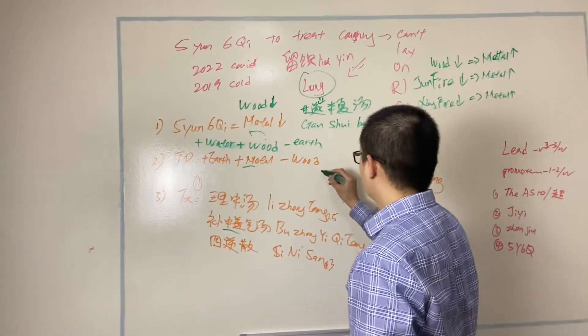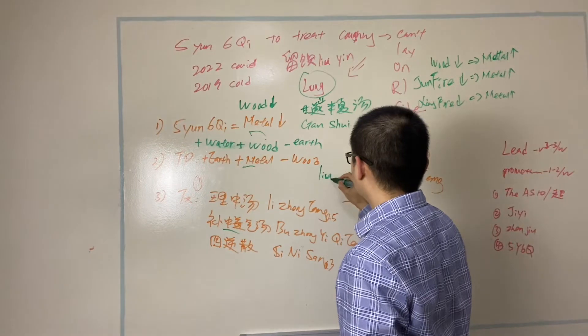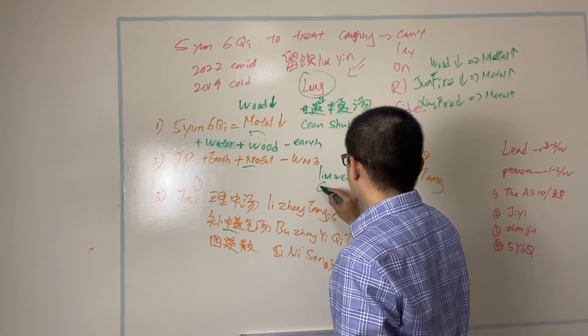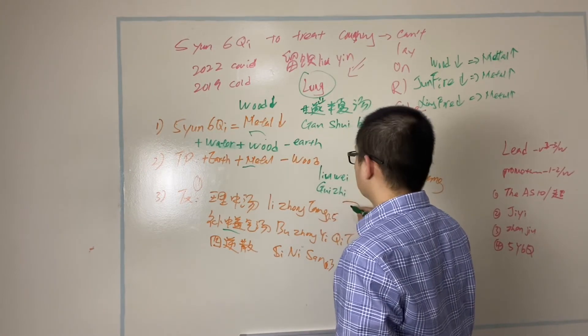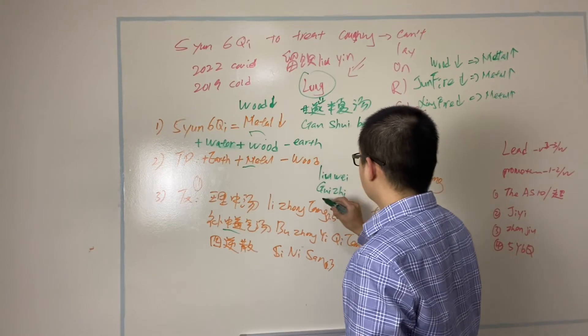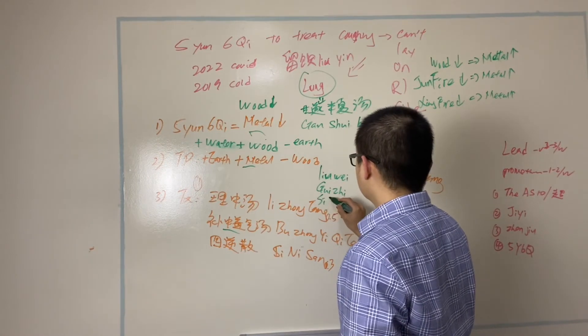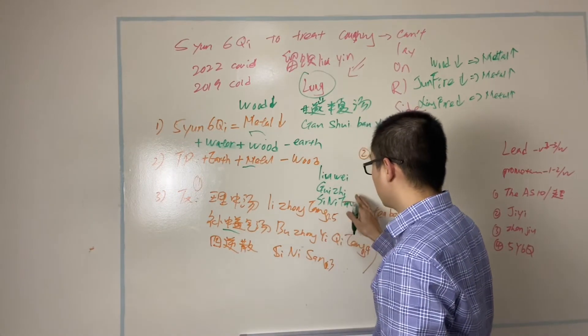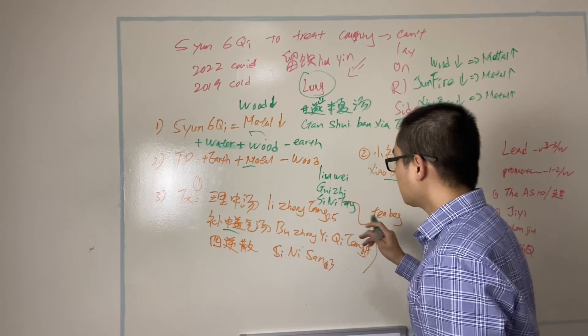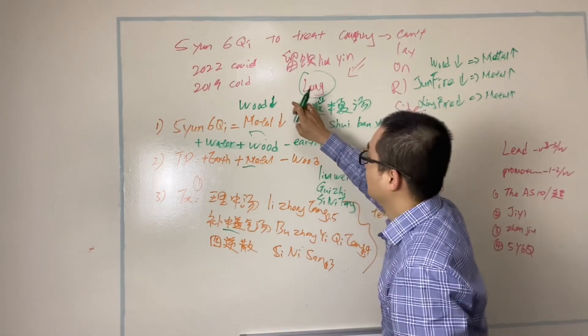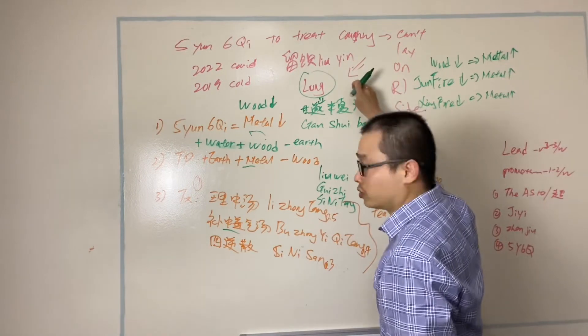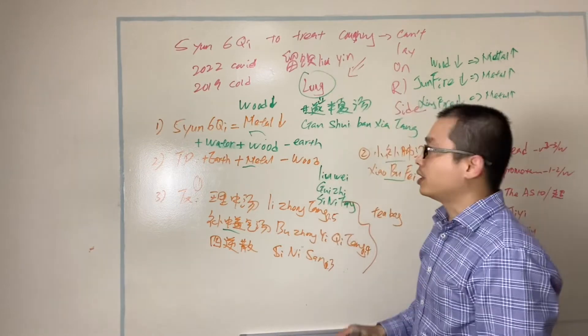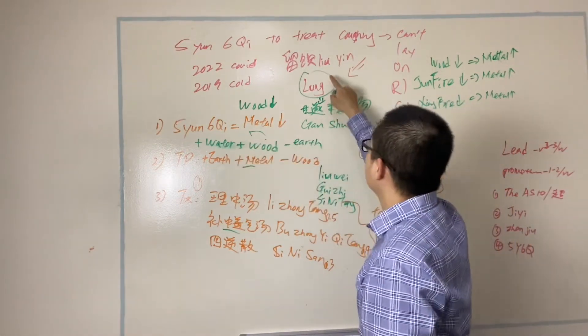Over here, water, we use Liu Wei Di Huang Wan. Wood, we use Gui Zhi Tang. We use Si Ni Tang. Different with Si Ni San. The ingredients different. This is the formula we use for here, for this one. And that can treat that too if the diagnosis is different. Over here you see, we don't have to go and treat lung.